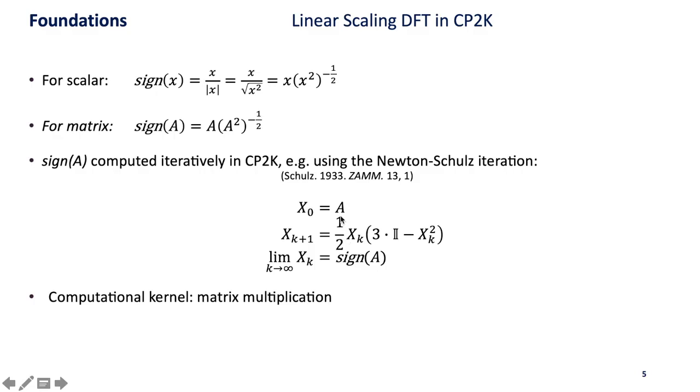We start with the matrix and then each iteration step we perform a couple of matrix multiplications and ultimately this will converge against sign of A. We see that the computational kernel now becomes matrix multiplication.